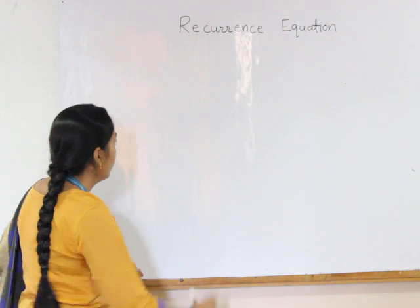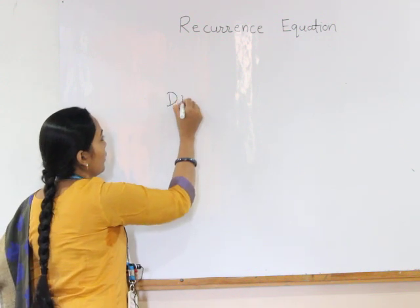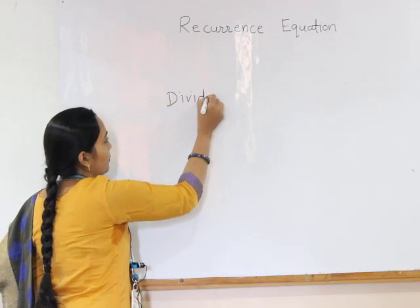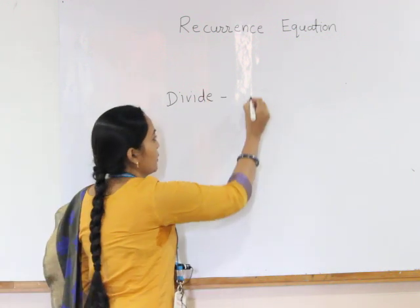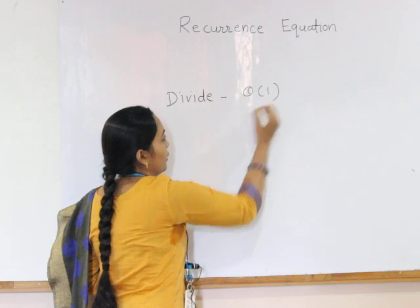As we know, in divide and conquer, the divide step just computes the middle of the array element. It takes theta of 1 time.